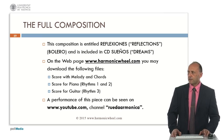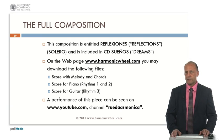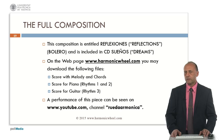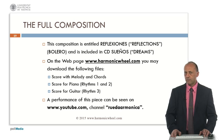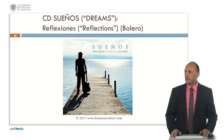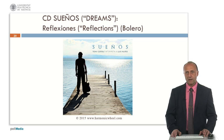Now we finish this simple composition. It is entitled Reflexiones — Reflexions in English. It is a bolero which is included in the CD Sueños, which means dreams. On the webpage HarmonicWheel.com you may download the score with melody and chords, the score for piano with rhythms 1 and 2, and the score for guitar with rhythm 3. A performance of this piece can be seen on YouTube in channel Rueda Harmonica, which means Harmonic Wheel. This is the CD Sueños, played by international guitarist Toni Cotoli. You can find all the information on the webpage HarmonicWheel.com. Thank you very much for your attention.